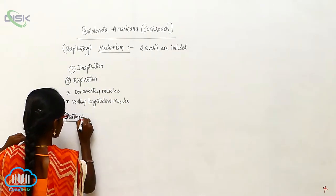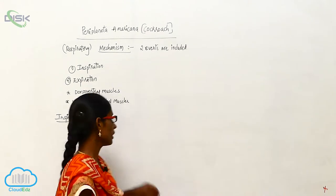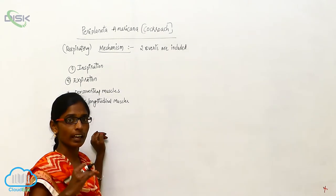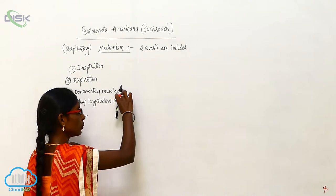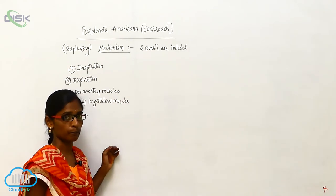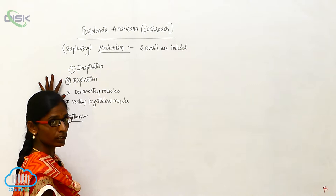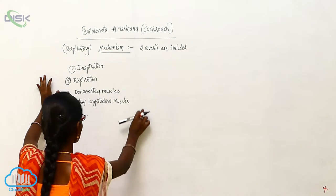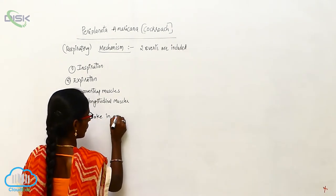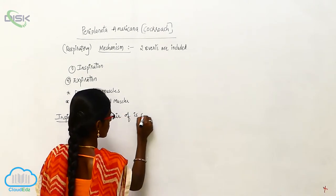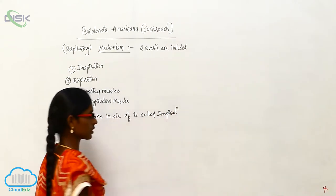Inspiration means taking in air from outside, and that is called Inspiration. Two muscles are involved in this Inspiration mechanism: the Dorsal Ventral Muscle and the Ventral Longitudinal Muscle.